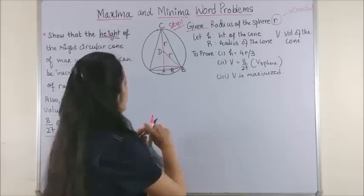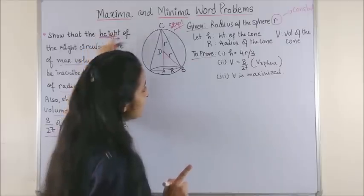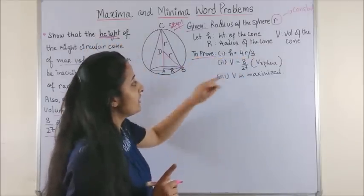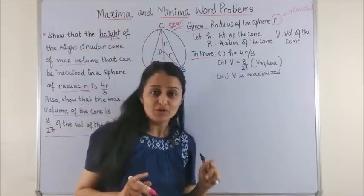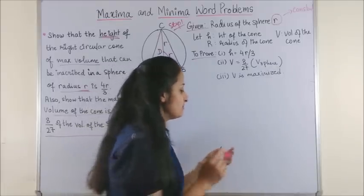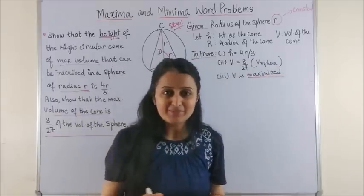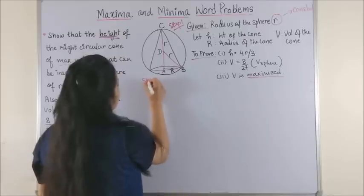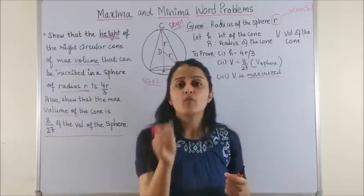Let capital V be the volume of the cone. Now to prove: first of all you have to show that the height is 4r by 3, then volume of the cone is 8 by 27 times volume of the sphere, and most importantly your volume of the cone is to be maximized.